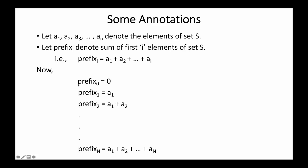So prefix_0 is going to be 0, the sum of the empty set. Prefix_1 is a1, prefix_2 is a1 plus a2. Similarly, prefix_3 will be a1 plus a2 plus a3, and so on until prefix_n, which is the sum of all elements in the set — that is a1 plus a2 plus a3 and so on until a_n.